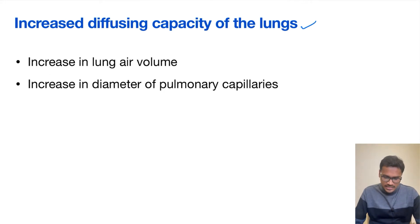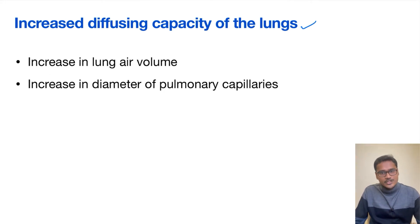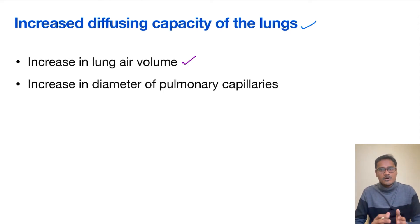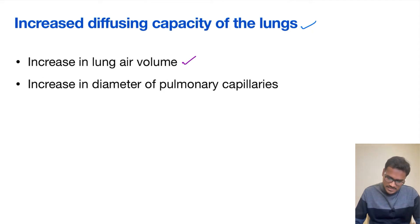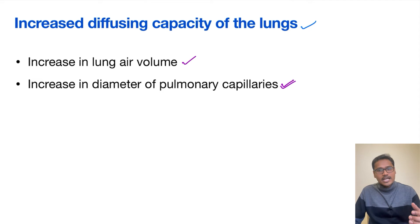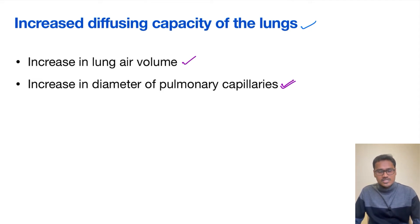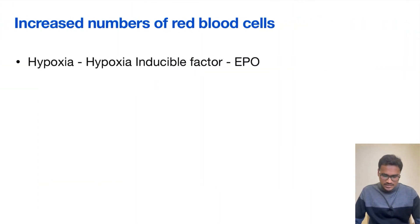The second change is an increase in diffusing capacity of the lung, which occurs in two ways. First, there is an increase in air-lung volume with the help of hyperventilation. Second, there is an increase in the diameter of the pulmonary capillaries, and more capillaries are recruited. Because of these two processes, the diffusing capacity of the lung improves significantly.